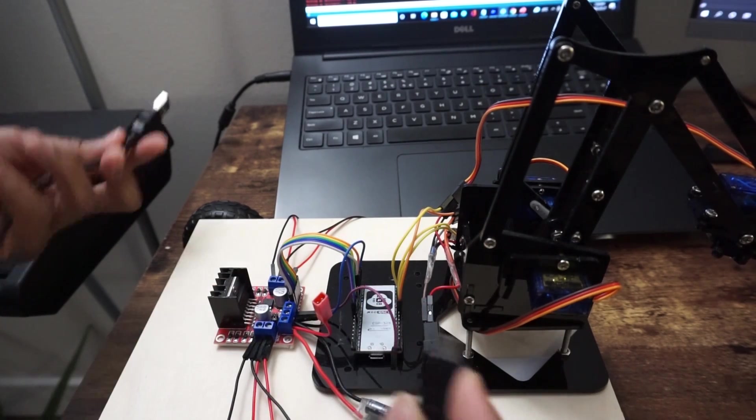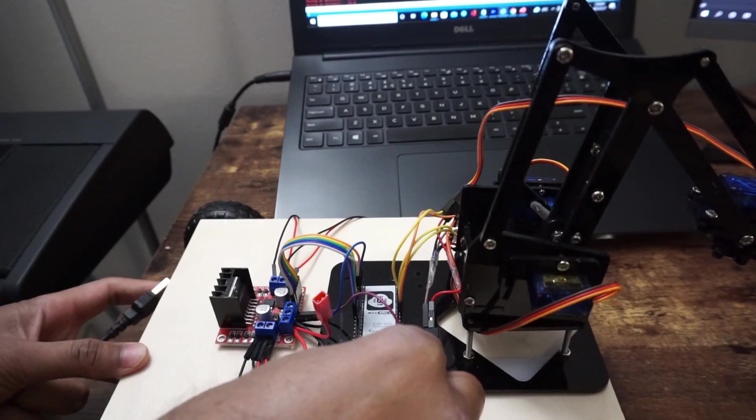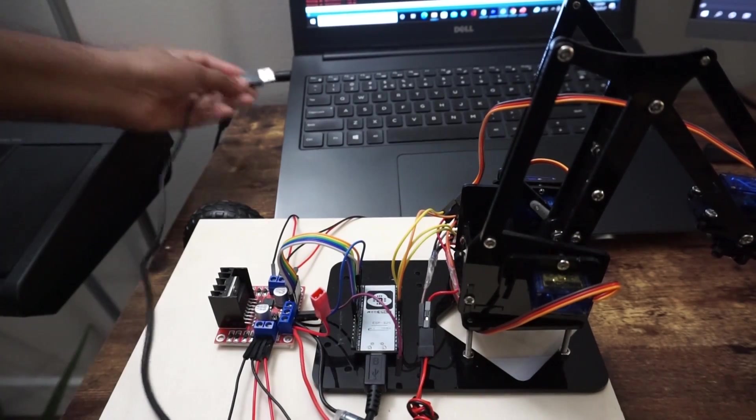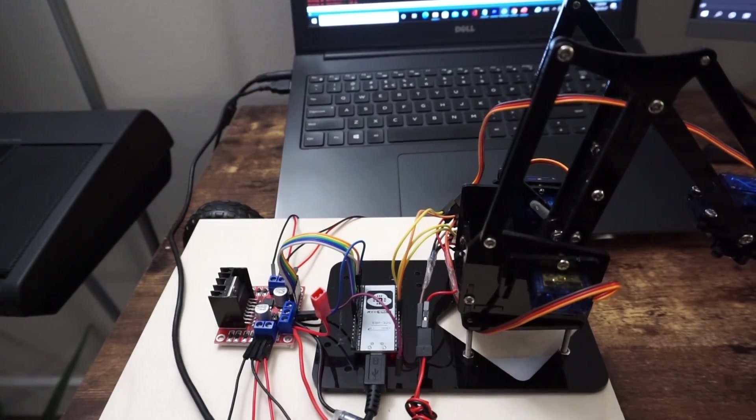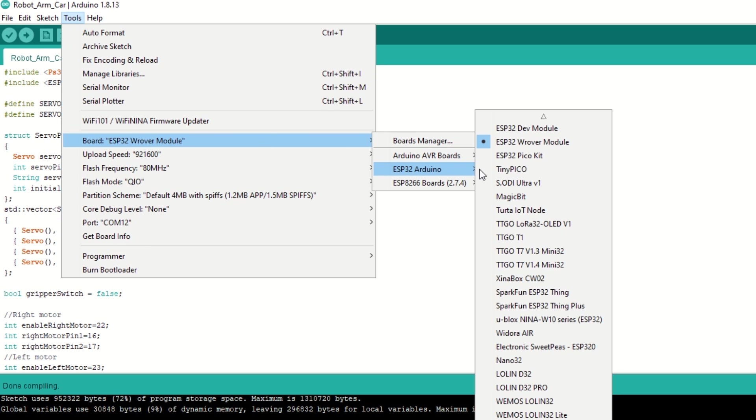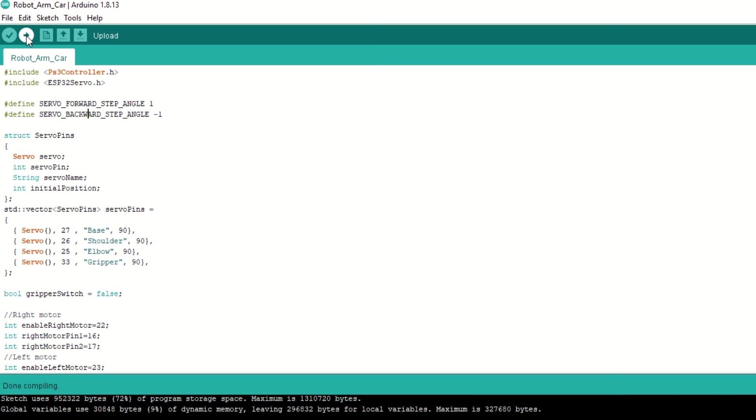Remove 5V wire from ESP32 module. Now connect ESP32 module to laptop using USB cable. Select ESP32 module and port. Hit upload.